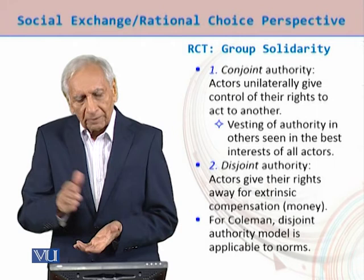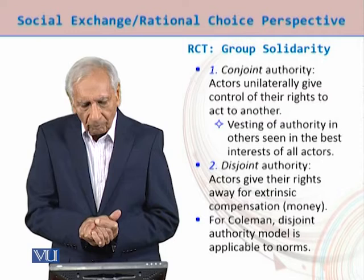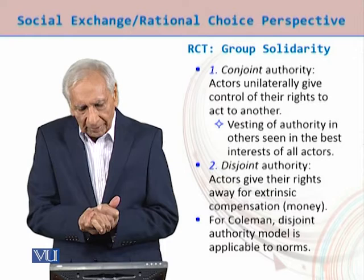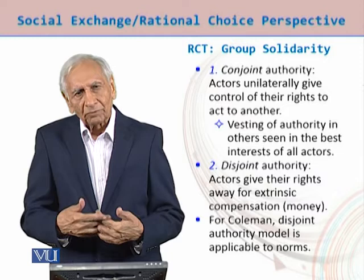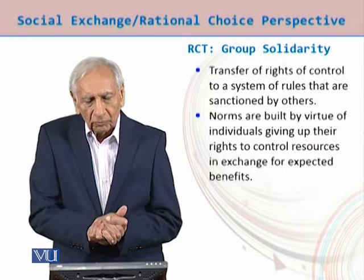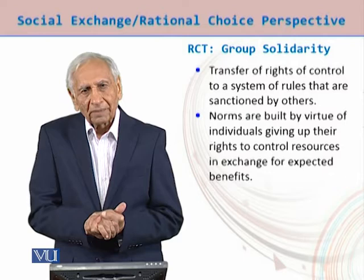The first is conjoint authority, where actors unilaterally give control of their rights to another, vesting the authority in others seen as acting in the best interest of all the actors. The second is joint authority, where actors give their rights away for an extrinsic compensation — a medium of exchange, such as money. For Coleman, this joint authority model is applicable to norms, and here we see a transfer of rights of control to a system of rules sanctioned by others.